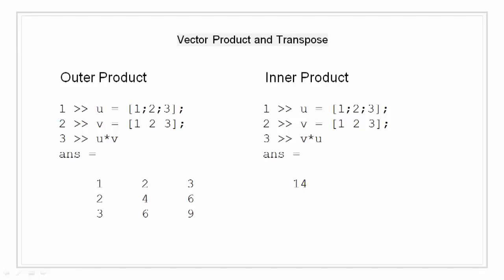So, in the example here, I have defined a column vector u and a row vector v. Multiplying u and v with u in the forefront does an outer product that generates a matrix, that is shown on the left side. Similarly, multiplying u and v with v in the forefront does an inner product that generates a scalar, as shown on the right side.